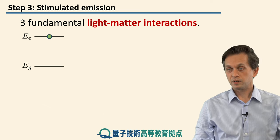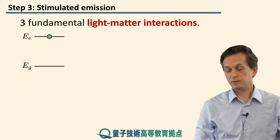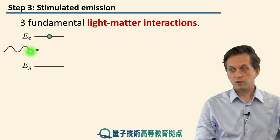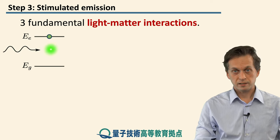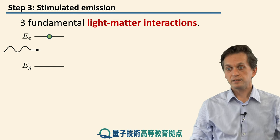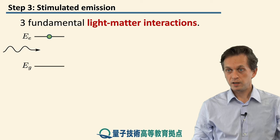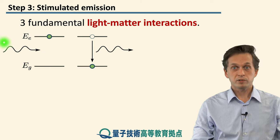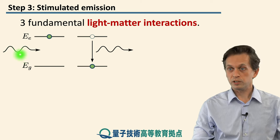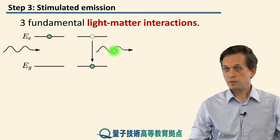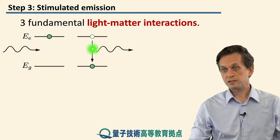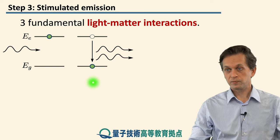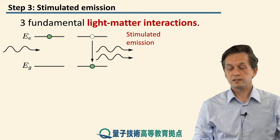The third fundamental light-matter interaction is the following. We have the atom sitting in the excited state, and this time a photon of the right frequency — corresponding to the energy difference between the excited state and the ground state — comes along and stimulates the atom. What can happen is that the atom transitions down to its ground state without absorbing the initial photon. So the initial photon is still there, but while the atom transitions from the excited state to the ground state, it also gives out energy in the form of another photon. This process is known as stimulated emission.